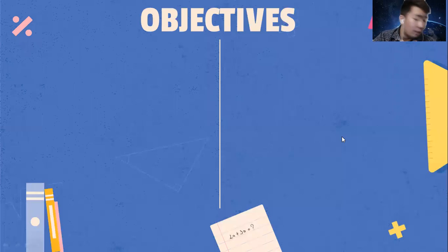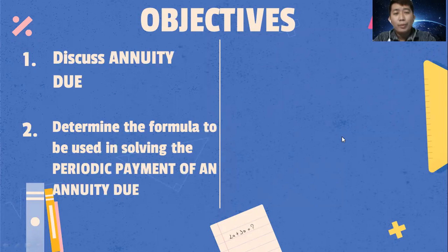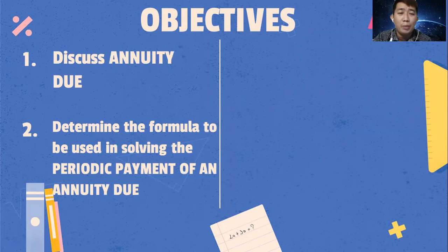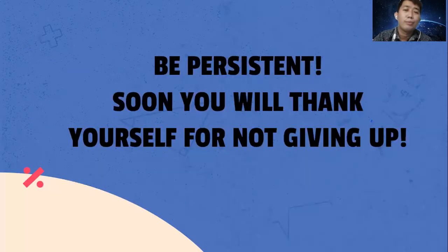What are the objectives of this lesson? Number one, discuss annuity due. Number two, determine the formula to be used in solving the periodic payment of an annuity due. And number three, solve the periodic payment of an annuity due.